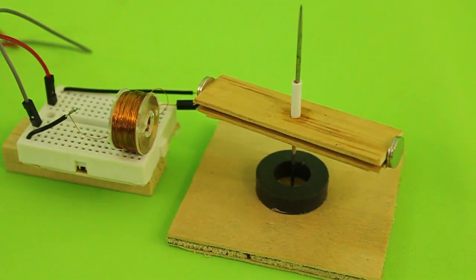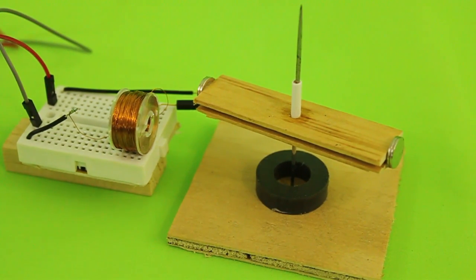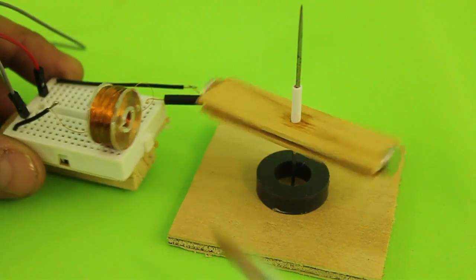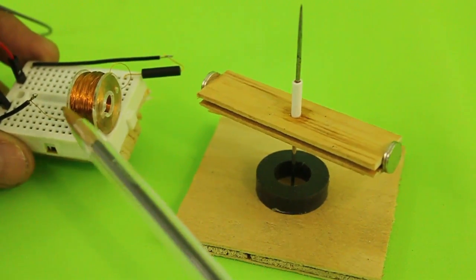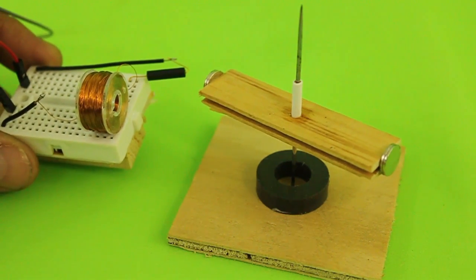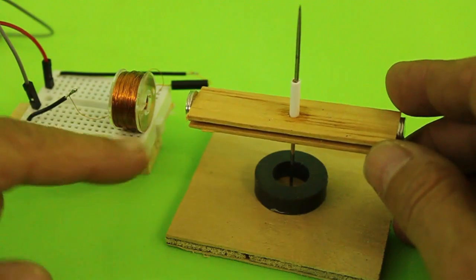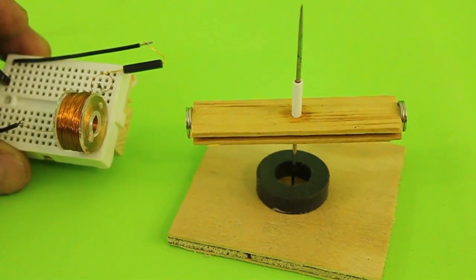This is just a pulse motor and works the same as other pulse motors that I have in the channel. We have essentially an electromagnet and when the electromagnet is energized, it generates a magnetic field that pulls the magnets in the rotor.